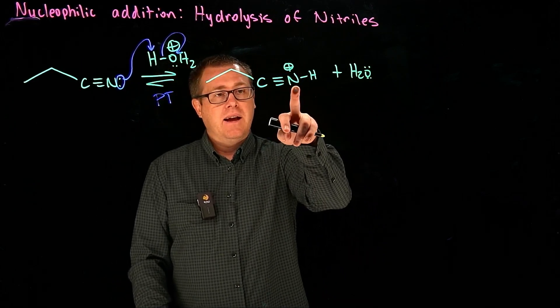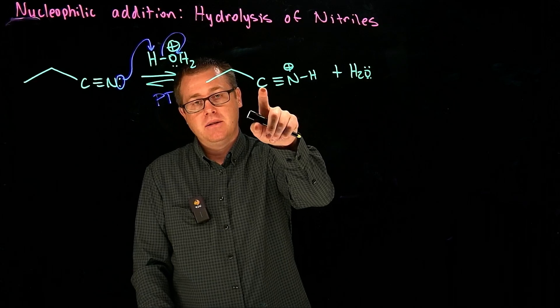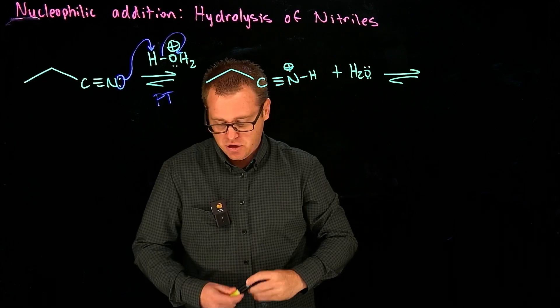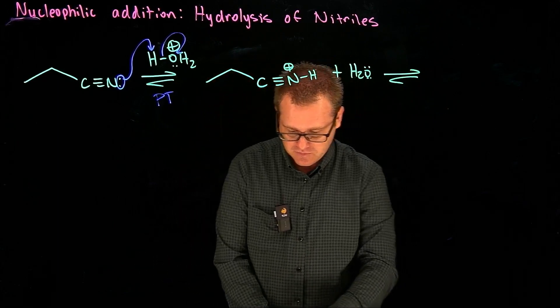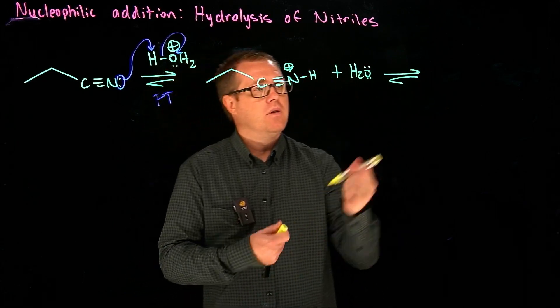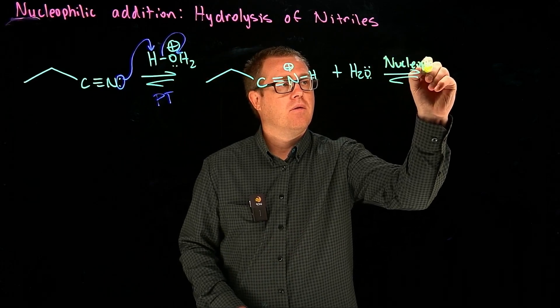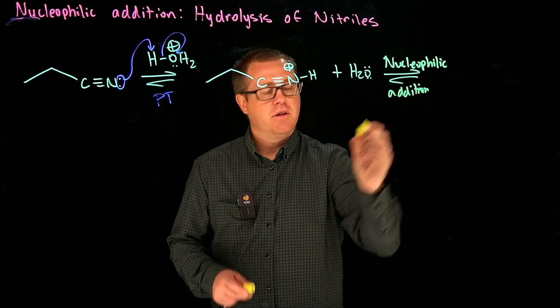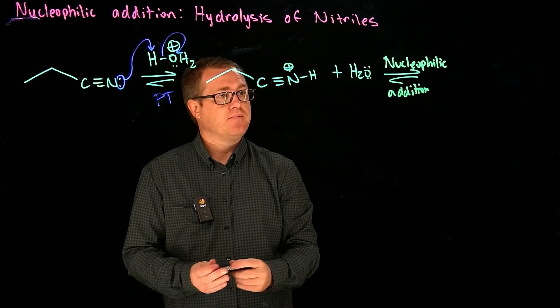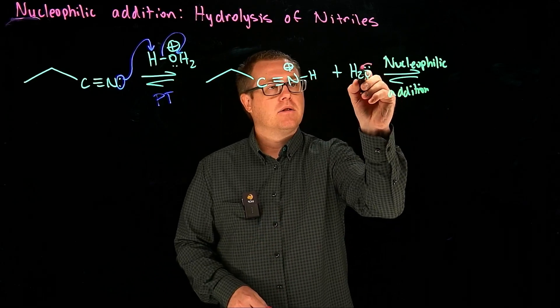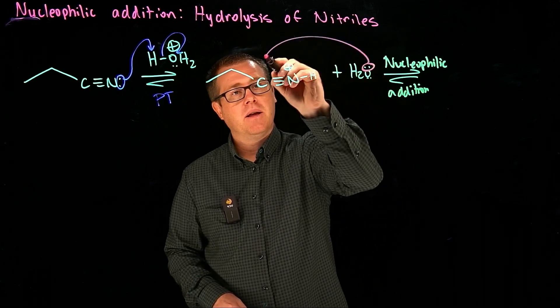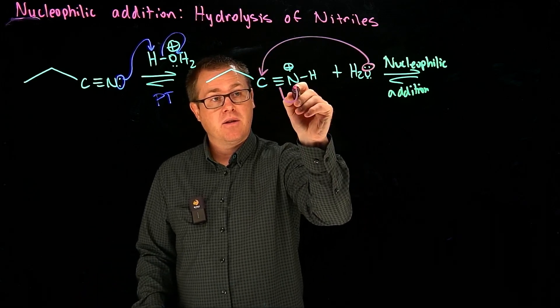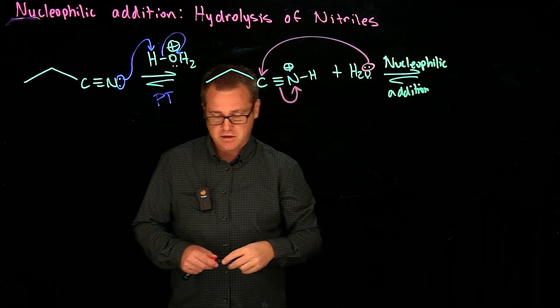Now protonating that nitrogen atom makes this carbon more electrophilic. So what we have next is a nucleophilic addition. We have a nucleophilic addition step where that lone pair on the water there can come in and attack that carbon. That's going to form a Texas carbon unless we take one of those pi electrons and stick it onto that nitrogen atom.